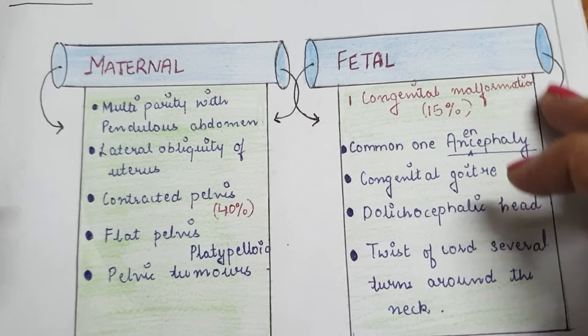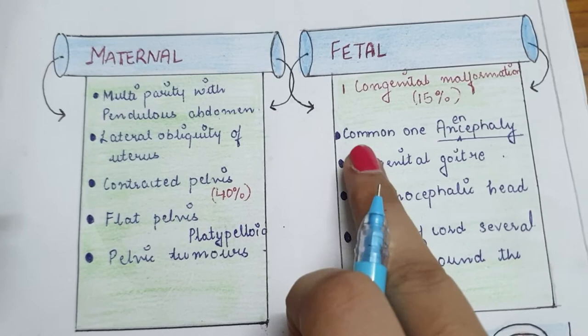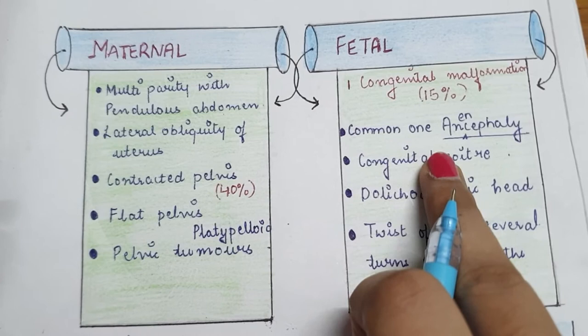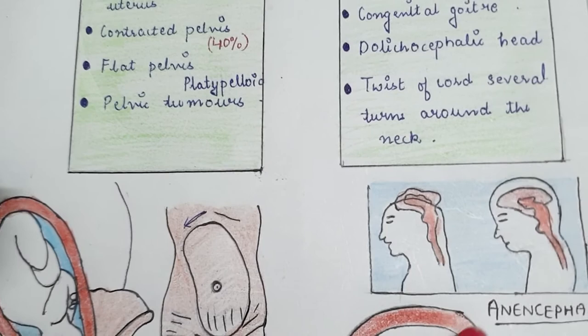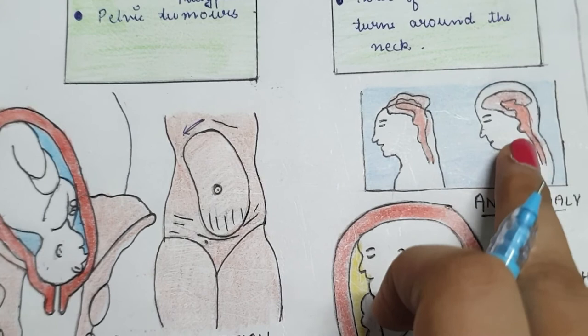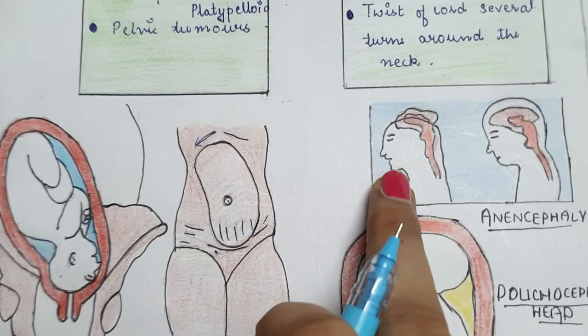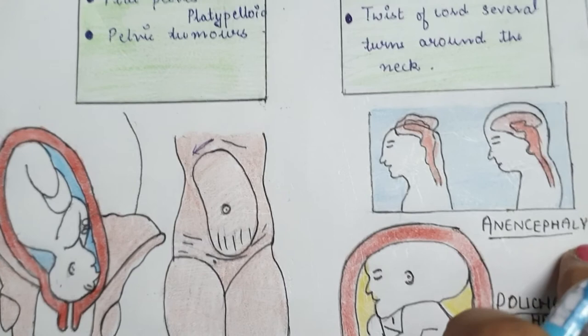Under fetal causes, there is a 15% chance that the cause behind face presentation is congenital malformation. The most common one is anencephaly. In anencephaly, the brain and skull bones are malformed. In a normal case the brain and skull bones are properly formed, but in anencephaly they are malformed. There are more chances of face presentation in anencephaly because only the face appears normal.